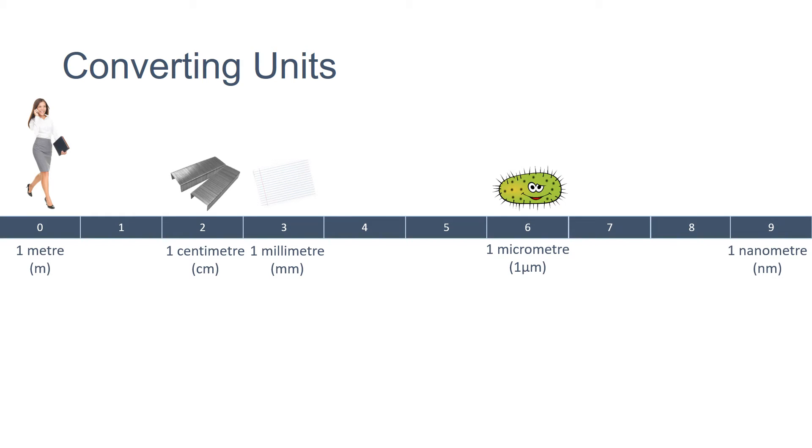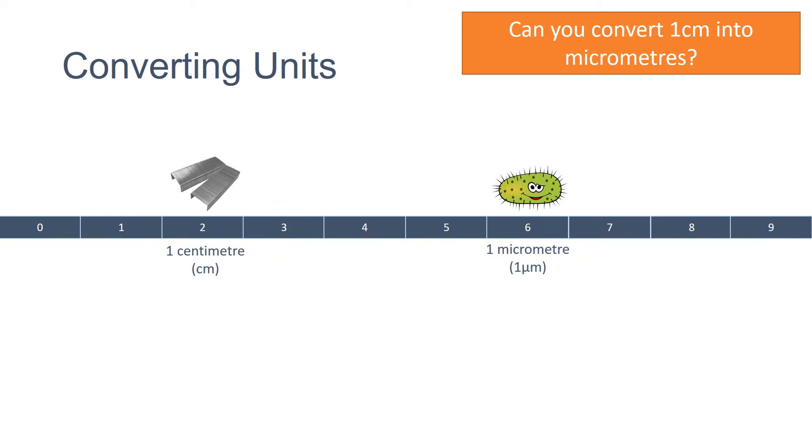Using this scale bar, we can easily convert between the difference. Let's have a go at this question. To convert from centimetres into micrometres, we need to consider how many orders of magnitude we are moving. There are four orders of magnitude difference between centimetres and micrometres, and this is the equivalent of multiplying by ten four times. Therefore, to convert centimetres we need to multiply by ten thousand. Therefore, one centimetre is equal to ten thousand micrometres.